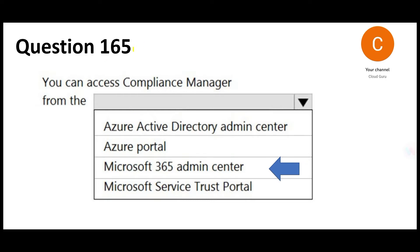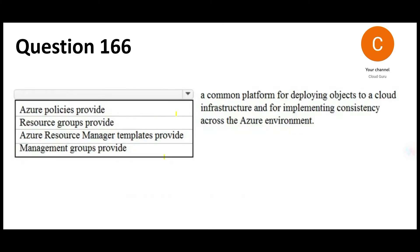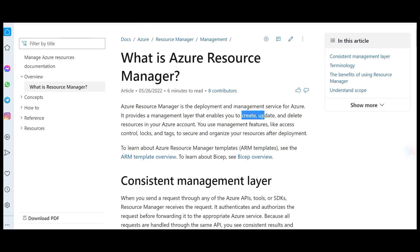The next question is primarily about infrastructure as code, because when we talk about consistency, that is infrastructure as code. Looking at the options, only ARM fits this requirement — it allows you to automatically create, update, and delete resources in your account.